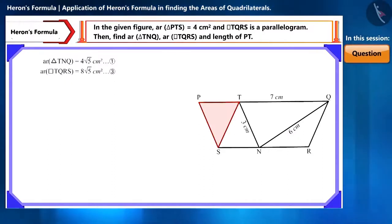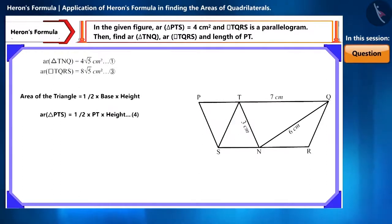In the next part, in triangle PTS, we need to find the length of PT. We know the area of triangle PTS. Here, we don't have any information about the sides. If we can somehow find the height of this triangle, then using the formula for the area of triangle, half multiplied by base multiplied by height, we can find the length of the base PT. You can pause the video and try to find a way to find the height.